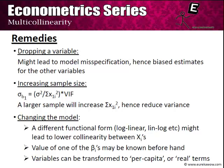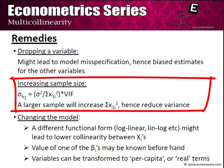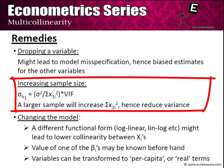The second and simpler remedy is to increase the sample size. The variance of β1 equals the true variance of β1 multiplied by the VIF. A larger sample size increases Σx1i², since x1i = xi − x̄ and this squared term is never negative. As the sample size increases, Σx1i² goes up and hence the variance of β1 comes down.